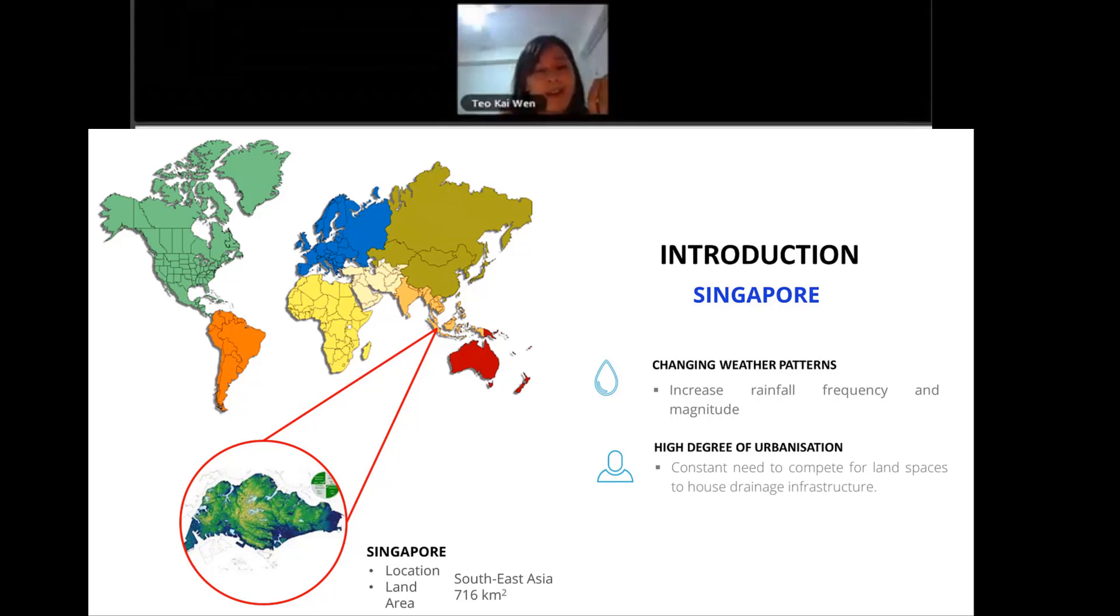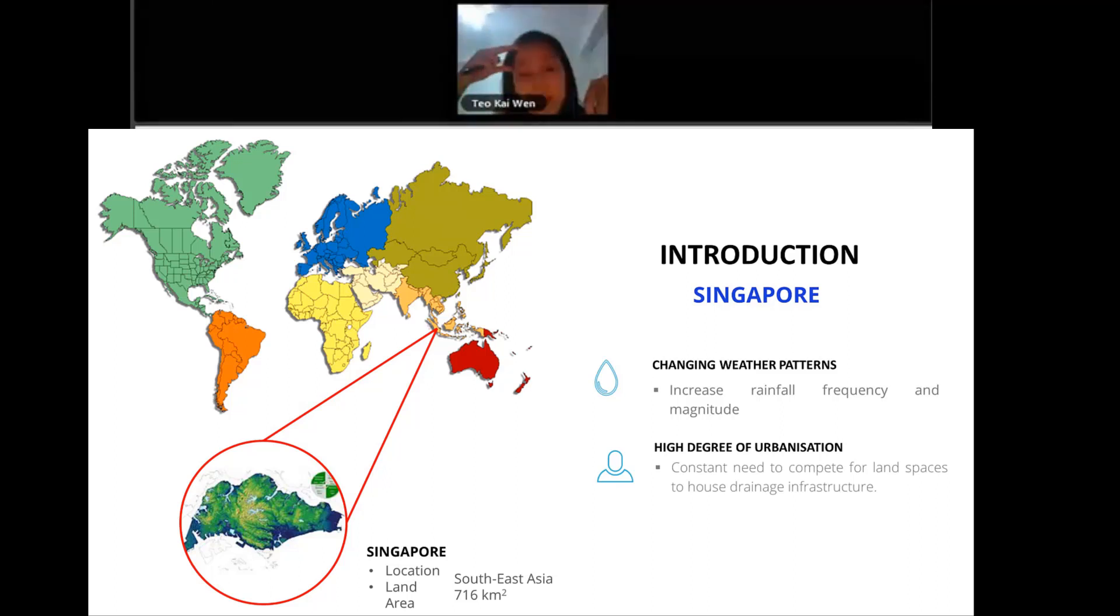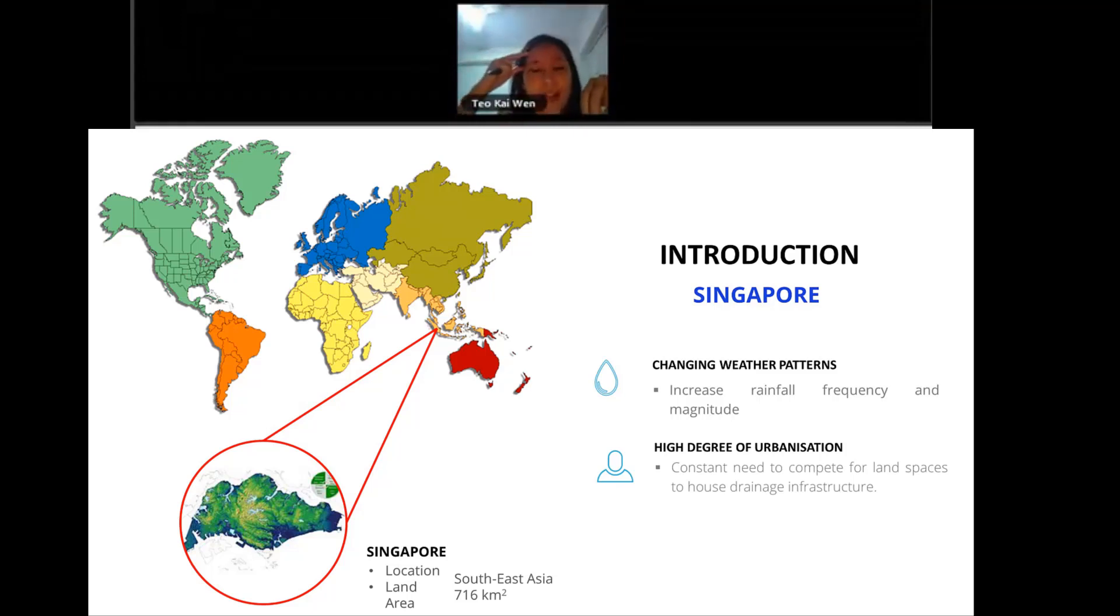I'll give you a very quick introduction of Singapore. It is a very small and tiny island in Southeast Asia. A lot of people say that Singapore is a city of China - it is actually not, it is a country of its own. We are in Southeast Asia, 716 kilometers square, which is super small compared to other countries.